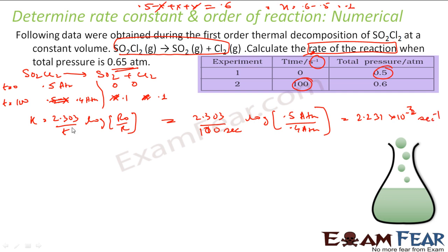But the question asks us to find the rate of reaction. The rate = K × [SO2Cl2]¹, since the order is 1. We know K, but we need [SO2Cl2] when total pressure is 0.65 atm. We use the same pressure table: SO2Cl2 = 0.5−X, SO2 = X, Cl2 = X. So I can find X and then the pressure of SO2Cl2.